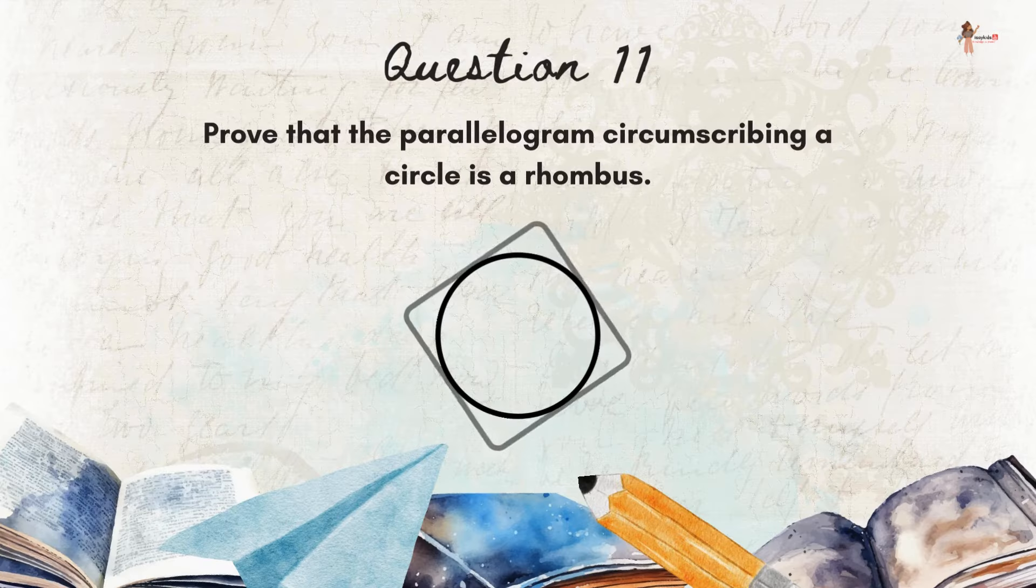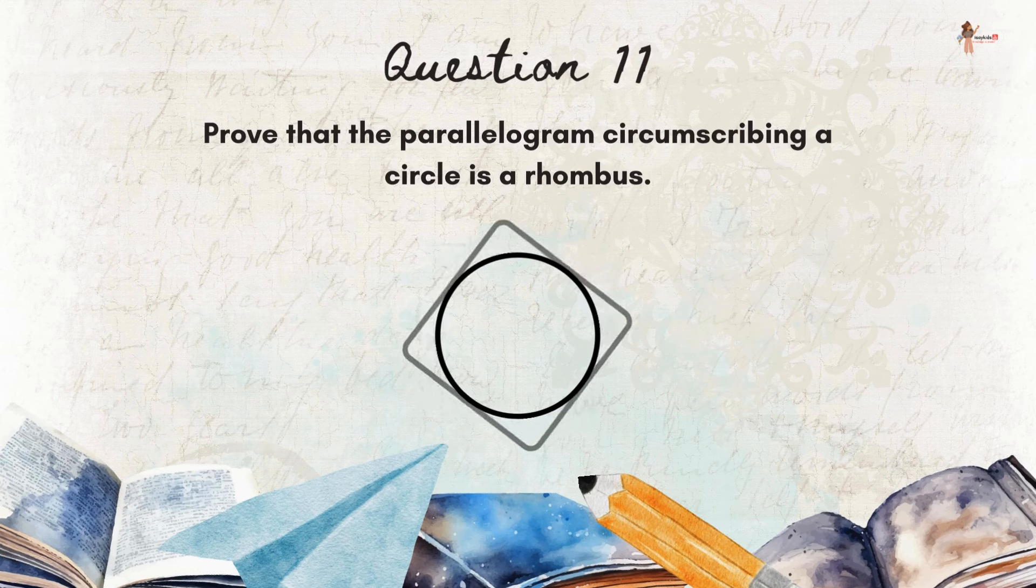Question 11. Prove that the parallelogram circumscribing a circle is a rhombus.